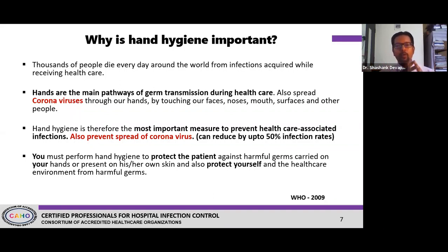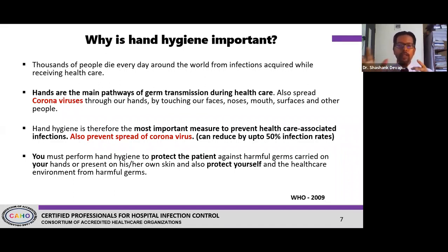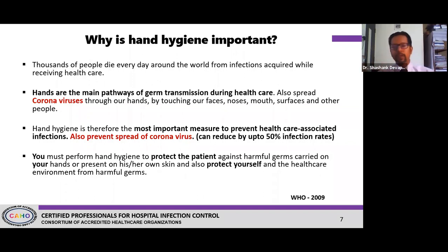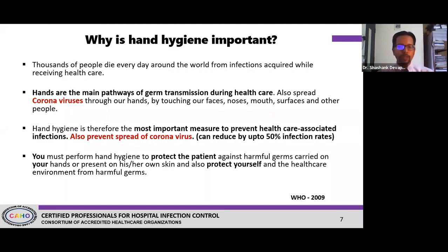Hand hygiene has been shown time and again as one of the best methods of preventing infections in hospitals and even at home. Most studies estimate that in hospitals, about 50% of your infection rate can be brought down simply by doing proper hand hygiene — and the same works for coronavirus. Hand hygiene is required for two reasons: protecting your patients by not transmitting infection, and protecting yourself by not ingesting pathogens you've collected on your hands.